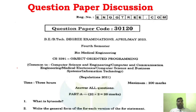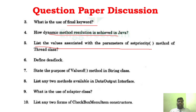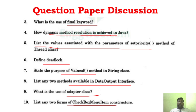We are now seeing the question paper discussion. We have taken the April/May 2023 question paper. Typical Part A questions include: what is the general form of a Java statement, what is the final keyword, how is dynamic method resolution achieved in Java, listing values associated with parameters, the purpose of the valueOf method in string classes, two methods available in DataOutput interface, the use of adapter class, and two forms of checkbox.